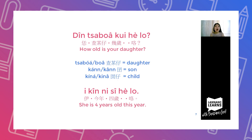This is how you ask about a child's age. So if you want to ask how old a child is, we say the question shown, and the answer would be: she is 4 years old this year. Just replace the number with the age of your child. So if your child is 6 years old, you just say the phrase for 6 years old.